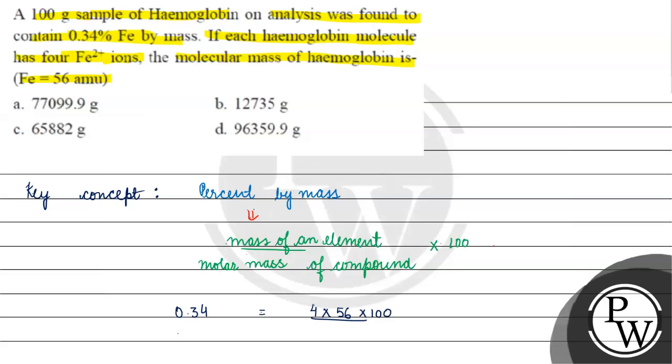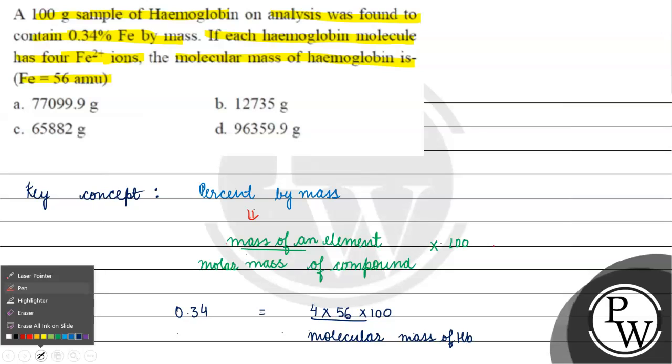What is our mass? 56 into 4 by molecular mass of hemoglobin. How much about this?